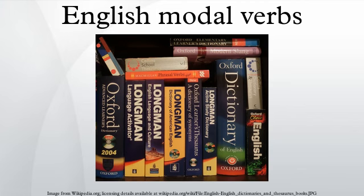Replacements for defective forms: English modal verbs are defective in that they do not have infinitive, participle, imperative, or subjunctive forms, and in some cases past forms. However, equivalent expressions exist. The modals 'can' and 'could', in their meanings expressing ability, can be replaced by 'be able to' and 'was/were able to'. Additional forms can thus be supplied: the infinitive 'be able to', the subjunctive and imperative 'be able to', and the participles 'being able to' and 'been able to'.